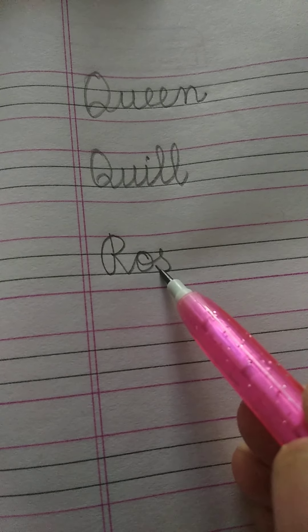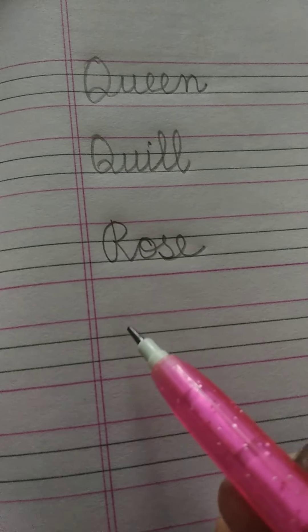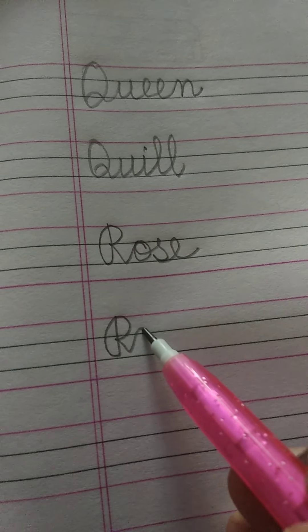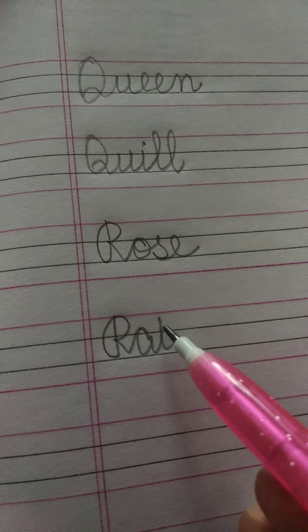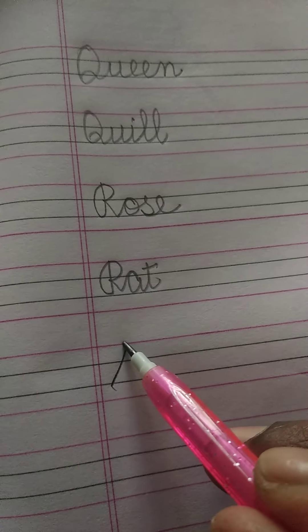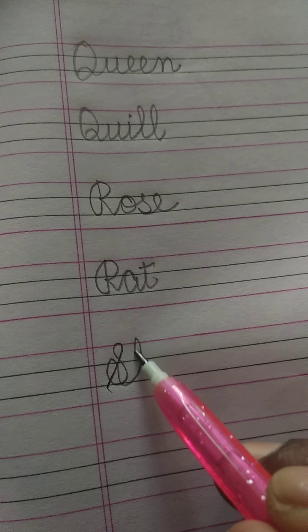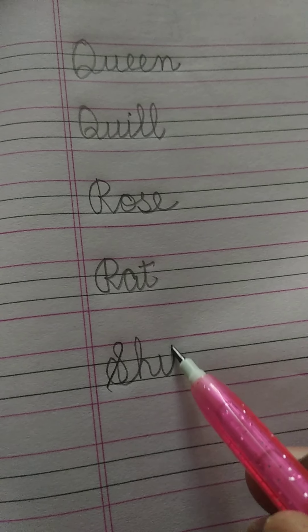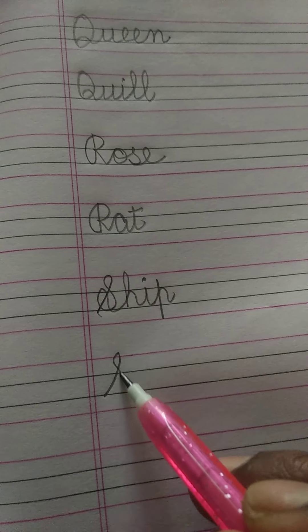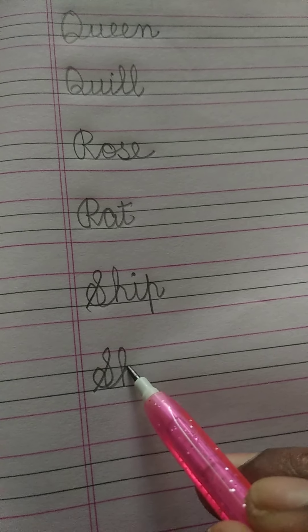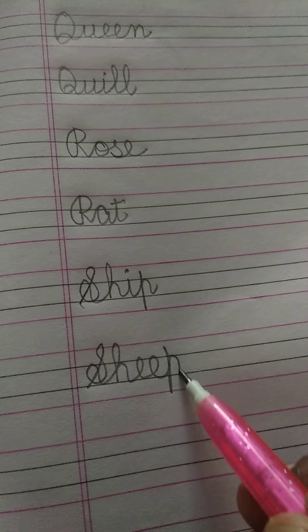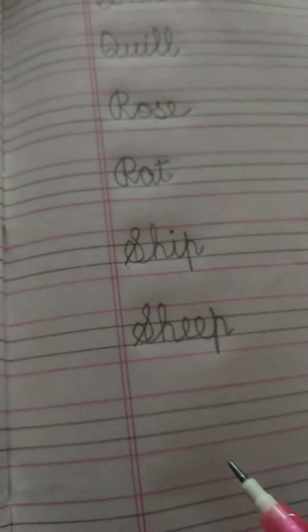Q for queen and quill. R for rose R O S E rose and rat R A T rat. S for ship S H I P ship and sheep S H E E P sheep.